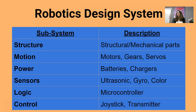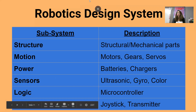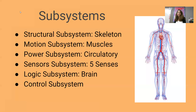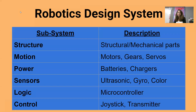There are six main subsystems in the robotics design system. Just write down the names of the subsystems — you do not need to write the descriptions because we're going to talk about each one in this lesson. The first subsystem is the structure. Then we have our motion subsystem, consisting of motors, gears, and servos — these allow the robot to have motion. We need power: you cannot make that robot move without batteries, a charger, or some sort of energy source.